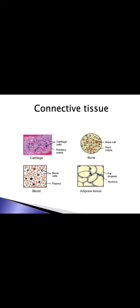Looking at the diagram of connective tissue: first, cartilage is shown — its cells are visible along with the rubbery matrix; cells are scattered within the matrix. For bone, since bone is hard, its matrix is also hard. For blood, we know there are three types of blood cells: RBC (red blood cells), WBC (white blood cells), and platelets. Adipose tissue shows fat droplets with a nucleus present inside each cell.